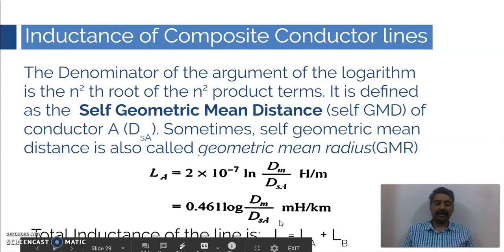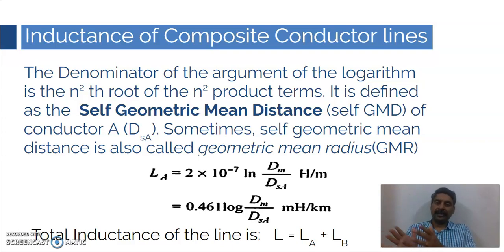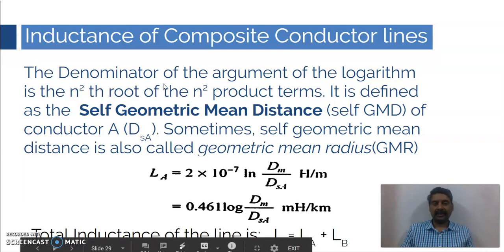The total inductance of the line is L = LA + LB, using the superposition theorem. So this is how we calculate the inductance of composite conductor lines. In this learning dialogue video, we discussed how to calculate the inductance of a single-phase line made up of composite conductors. In the coming learning dialogue video, we will discuss three-phase lines, moving from simple to complex and closer to real-time scenarios. Thank you.